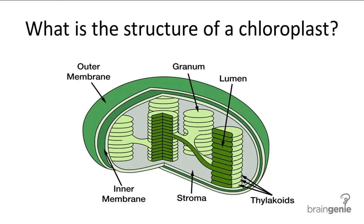Let's take a closer look at the structure of a chloroplast and where photosynthesis occurs. Like mitochondria, chloroplasts have double membranes.